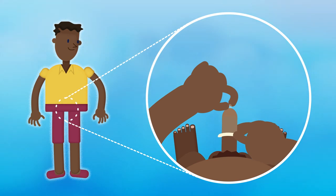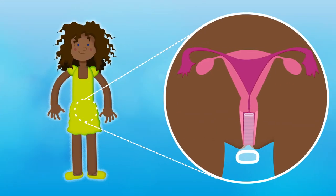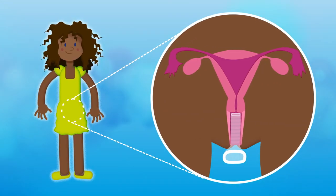The male condom is worn over the penis, while the female condom sits inside of the woman with the end sticking out for easy removal.